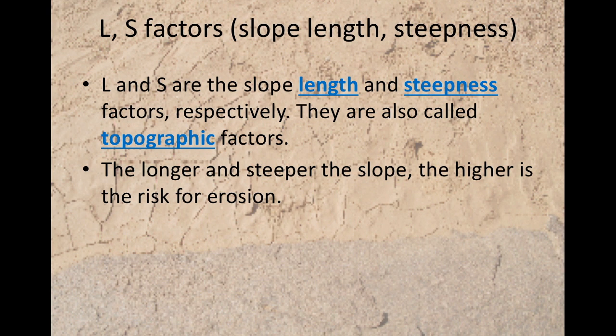Slope length and slope steepness, L and S, are the slope length and steepness factors respectively. They are called the topographic factors. The longer and steeper the slope, the higher the risk of erosion.